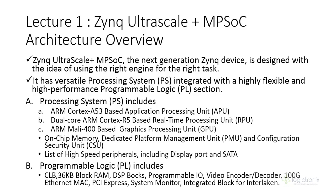In the Processing System there is the Application Processing Unit (APU), which is the ARM Cortex-A53 processor. Another is the Real-Time Processing Unit (RPU), which is the dual-core ARM Cortex-R5 processor. There is also the Graphics Processing Unit, which is the ARM Mali-400 MP. These three — APU, RPU, and GPU — are the major processing units, along with the Platform Management Unit and CSU (Configuration Security Unit).